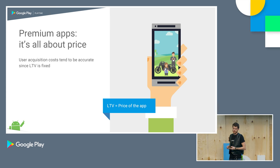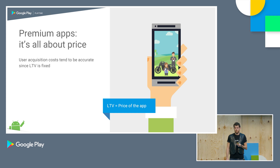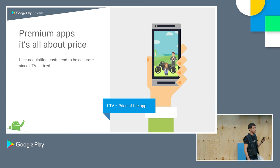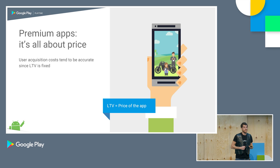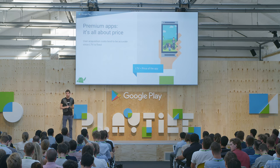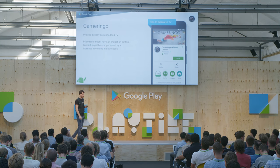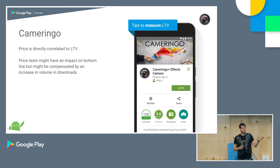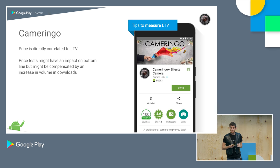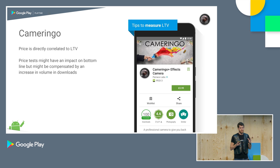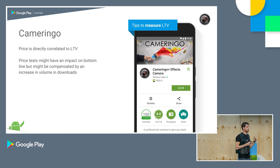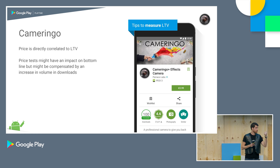Let's start with premium. The good news is premium is the easiest to calculate lifetime value for, because your LTV essentially equals the price. Your user acquisition costs also tend to be very accurately calculated because you can base them on your LTV — or best case, your net LTV. We talked to some contacts at Camaringo, one of the most popular photography apps on Google Play. They have a premium business model and told us that the price is key — it has to be exactly the price point the user is willing to pay. They do loads of testing around this.